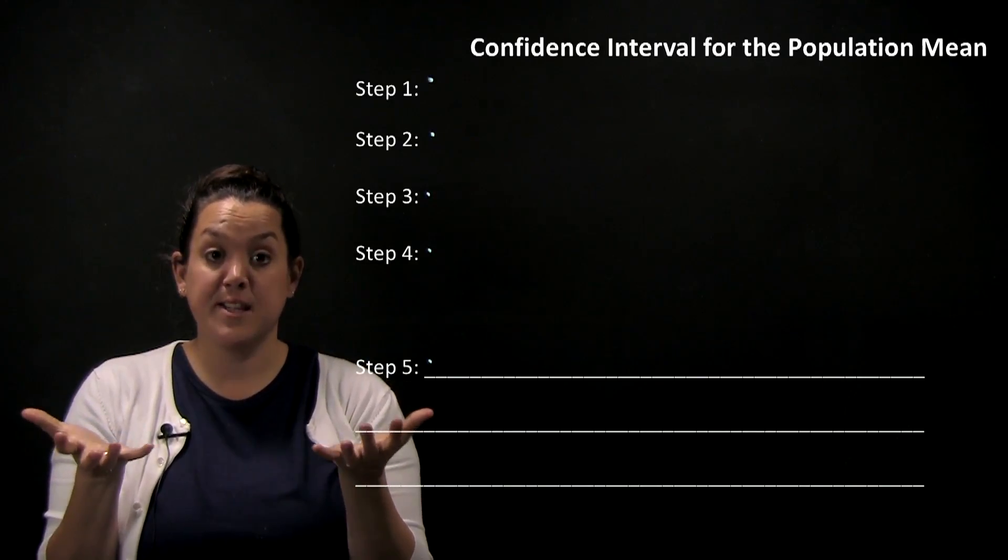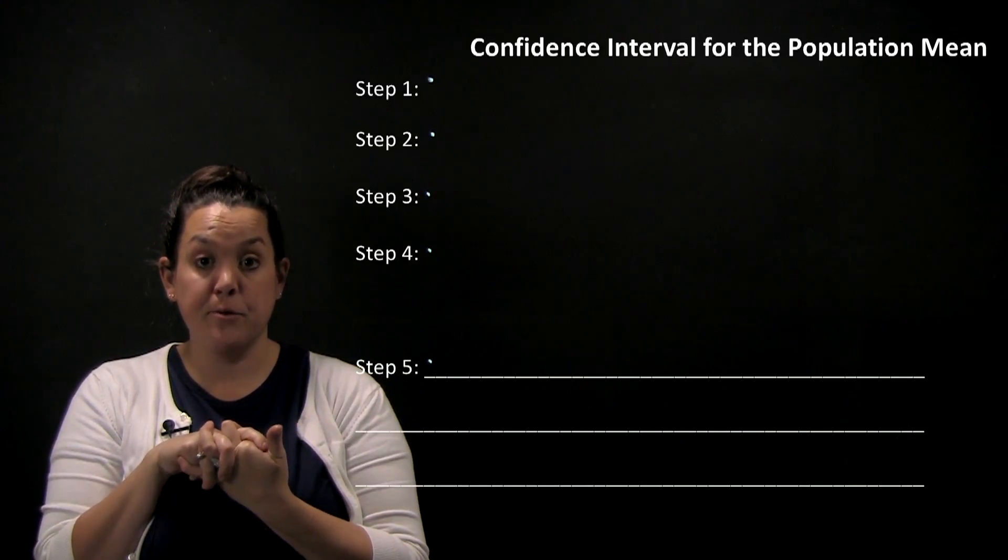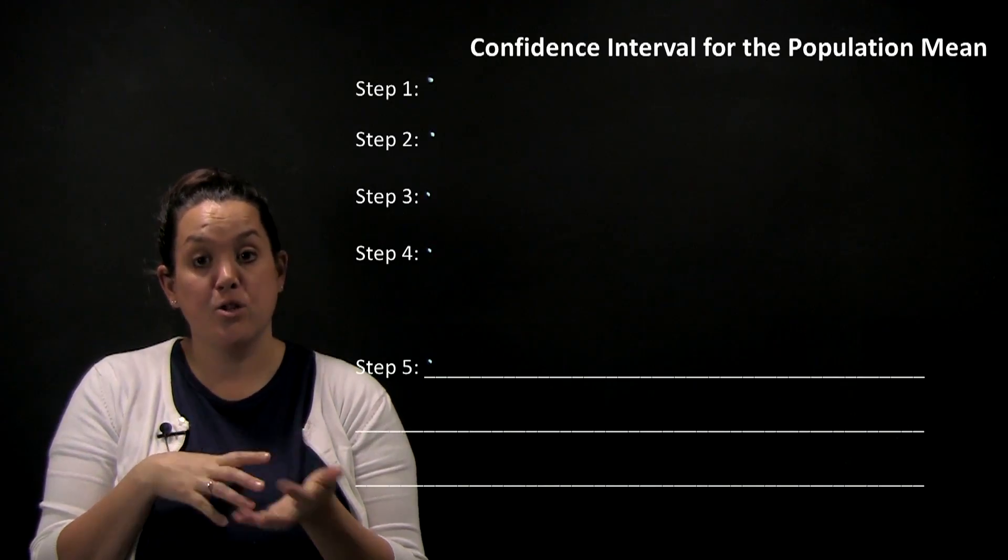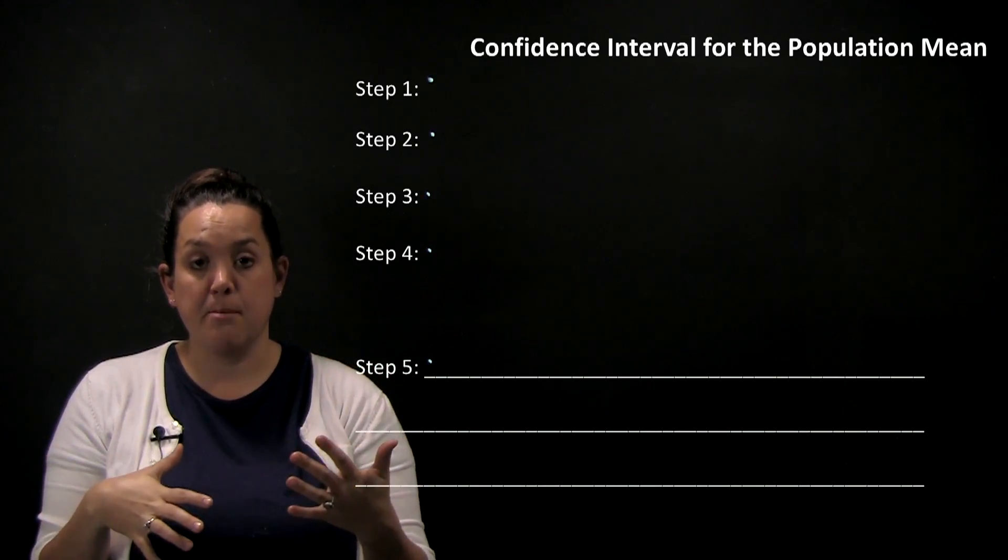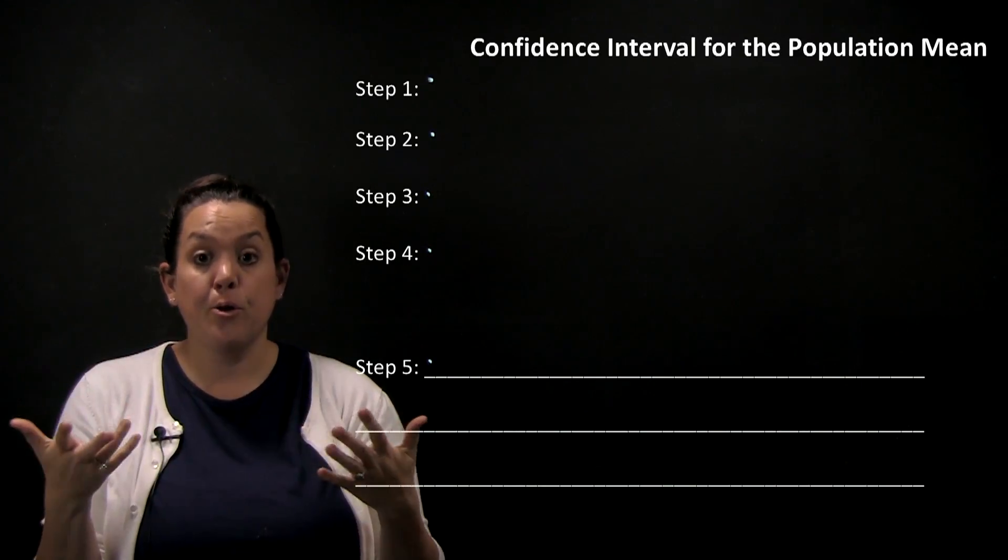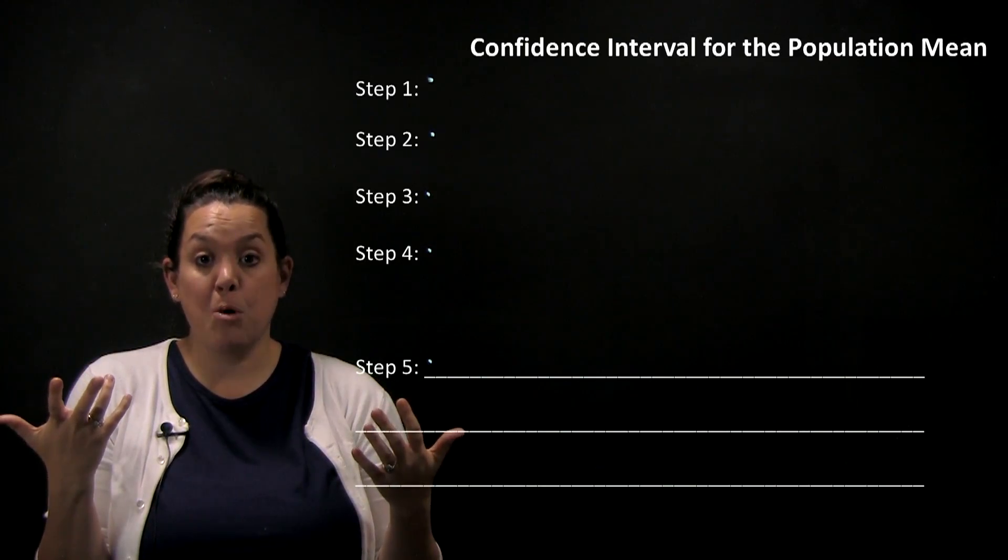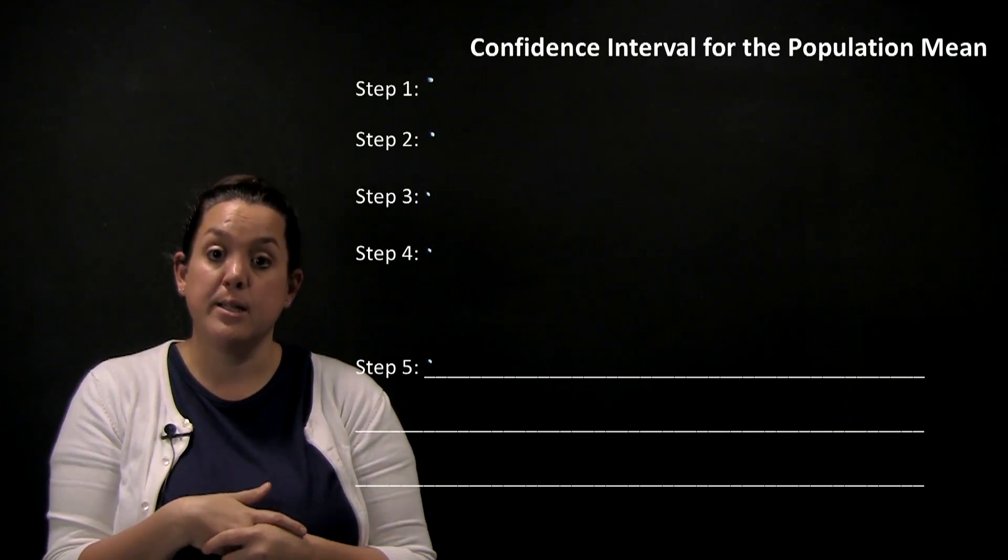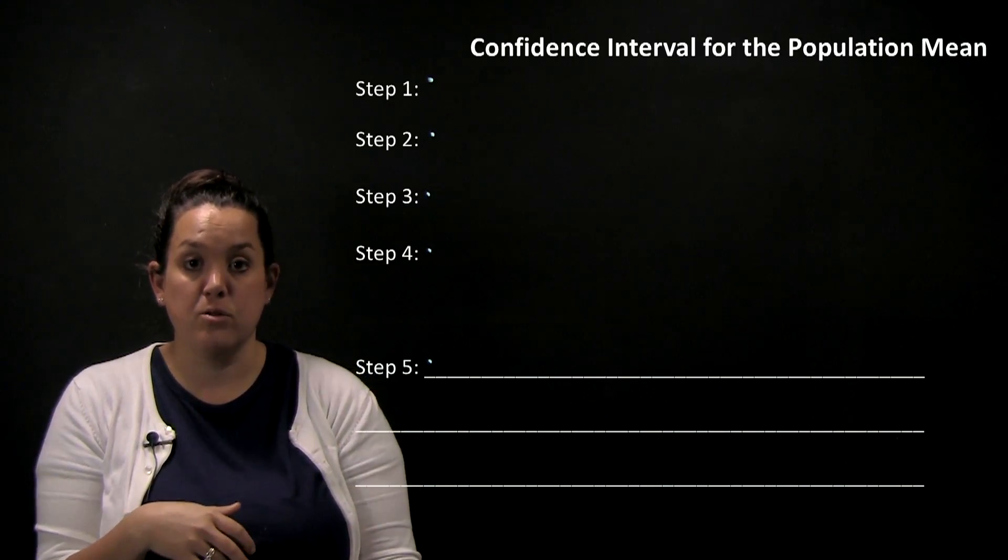Today we're going to look at our first example of calculating a confidence interval for one population mean. Last time we looked generically at steps for doing that. Now we're going to calculate a confidence interval looking at the mean number of hours for watching reality TV per week for GVSU students.